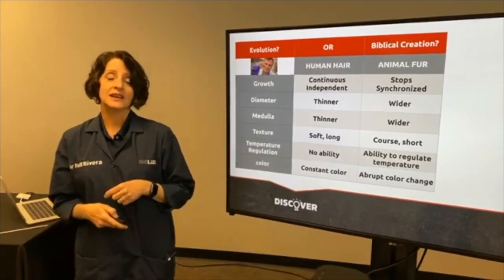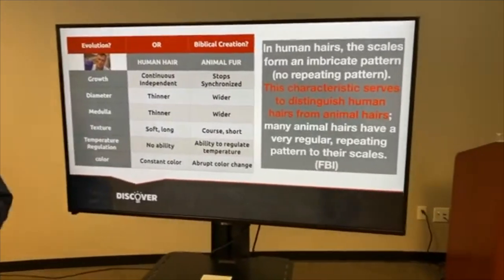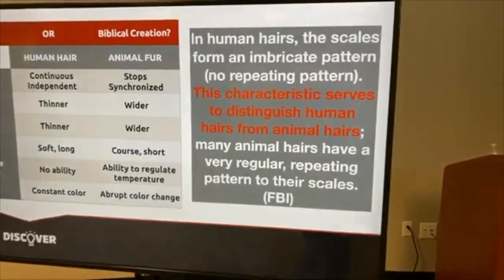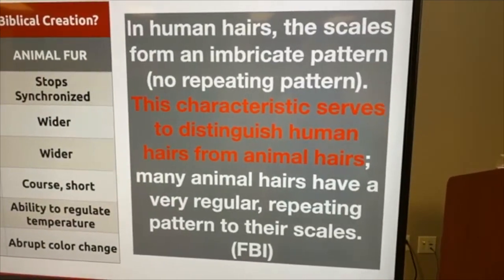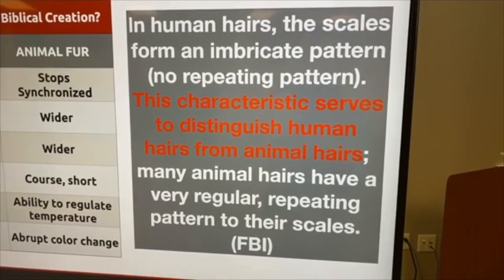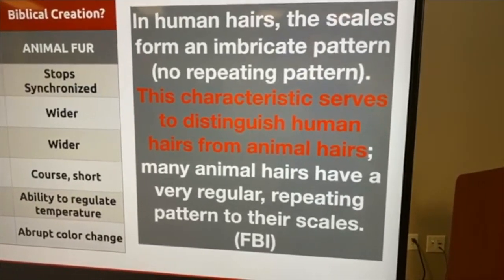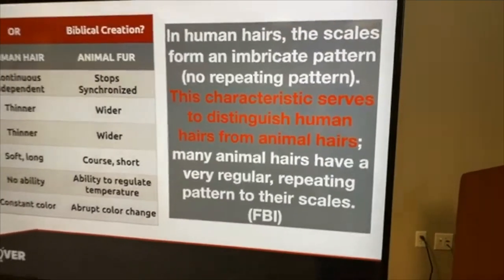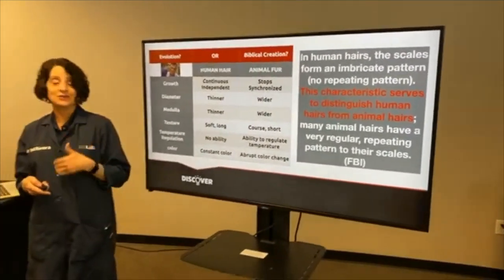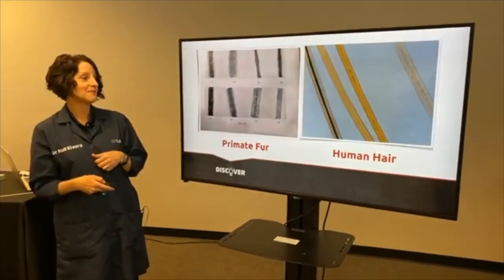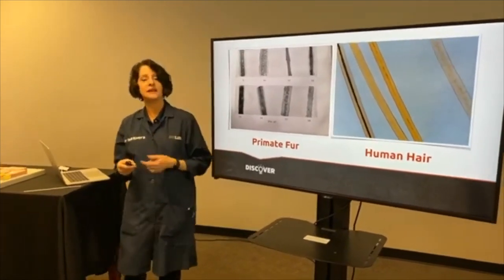The FBI even recognizes that human hair is distinctly different. They state: 'In human hairs, the scales form an imbricated pattern. This characteristic serves to distinguish human hairs from animal hairs. Many animal hairs have a very regular repeating pattern to their scales.' So even the FBI on their website had to acknowledge that human hair is distinctly different from animal fur — exactly what we expect to see because we are made in the image of God.